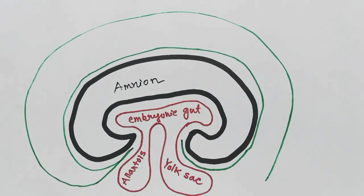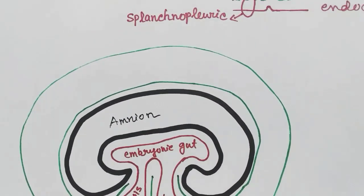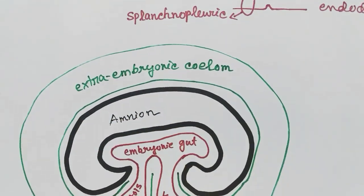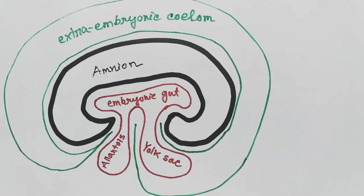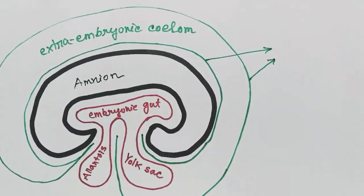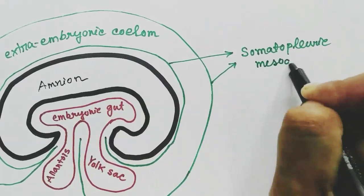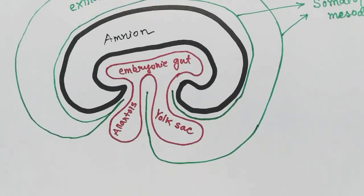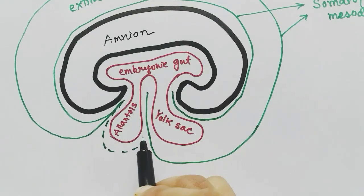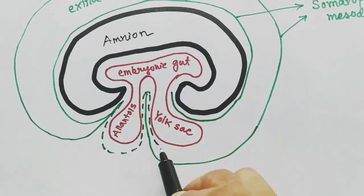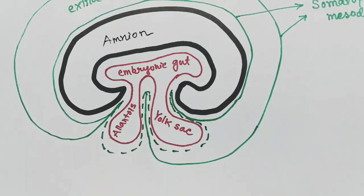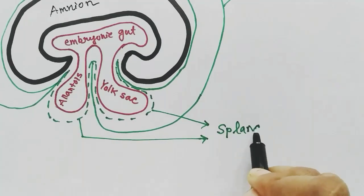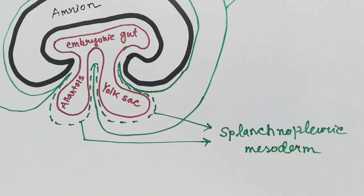The somatopleuric mesoderm will form the extra-embryonic coelum, which will also include the yolk sac. The lower layer, the splanchnopleuric mesoderm, will be associated with the allantois and the yolk sac — the endodermic layers.